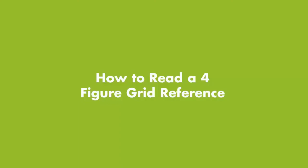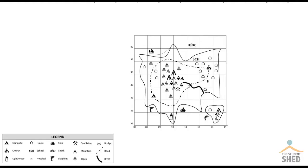How to read a four-figure grid reference. A grid reference is a way of giving a position on a map. A four-figure grid reference lets you find the whole square on the map. So if you're looking for the position of an item or a place, the four-figure grid reference will tell you which grid square that place or item is located on.